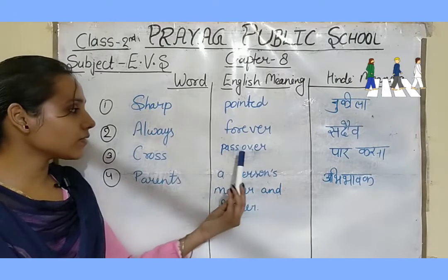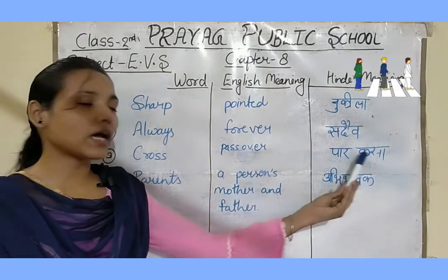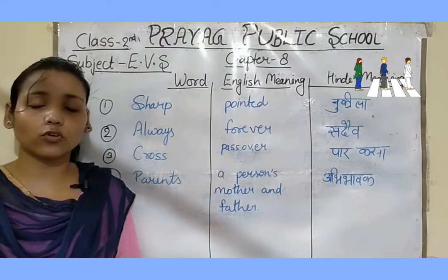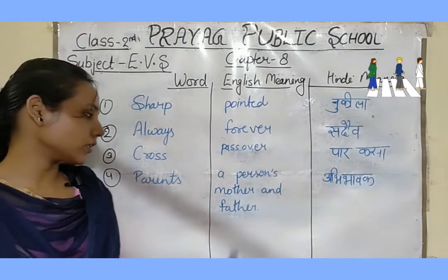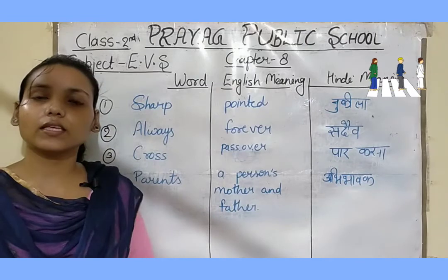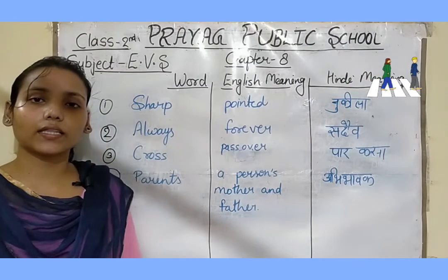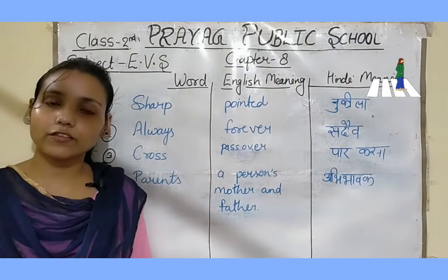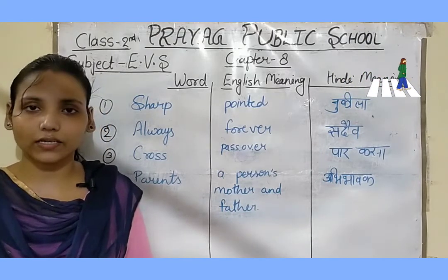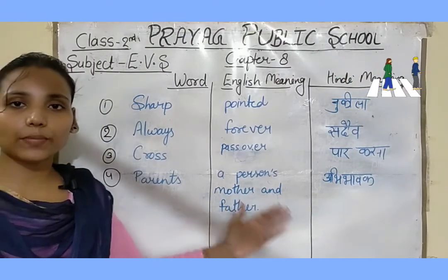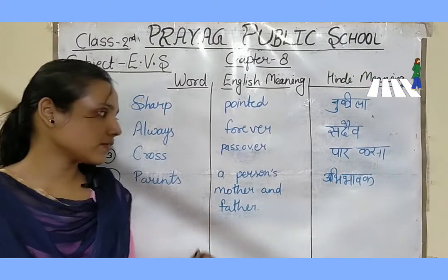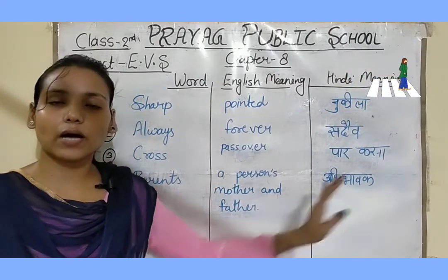Next word is cross — its English meaning is pass over and Hindi meaning is paar karna. We should cross the road at zebra crossing only. Next is parents — its English meaning is one's mother and father. Kisi bhi vyakti ke father aur mother ko hum parents kehte hain. Your father and mother are called parents — its Hindi meaning is Abhibhavak.